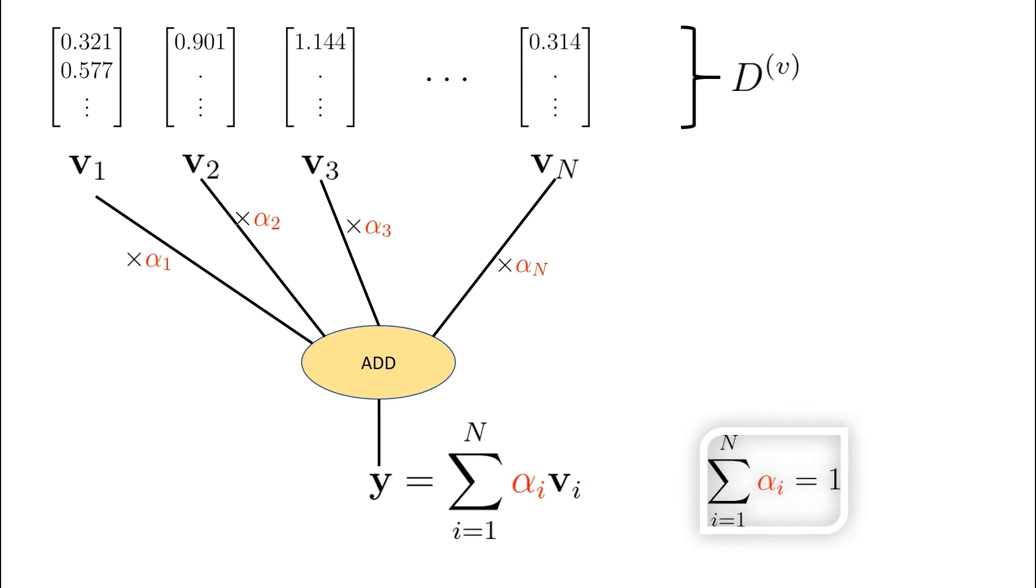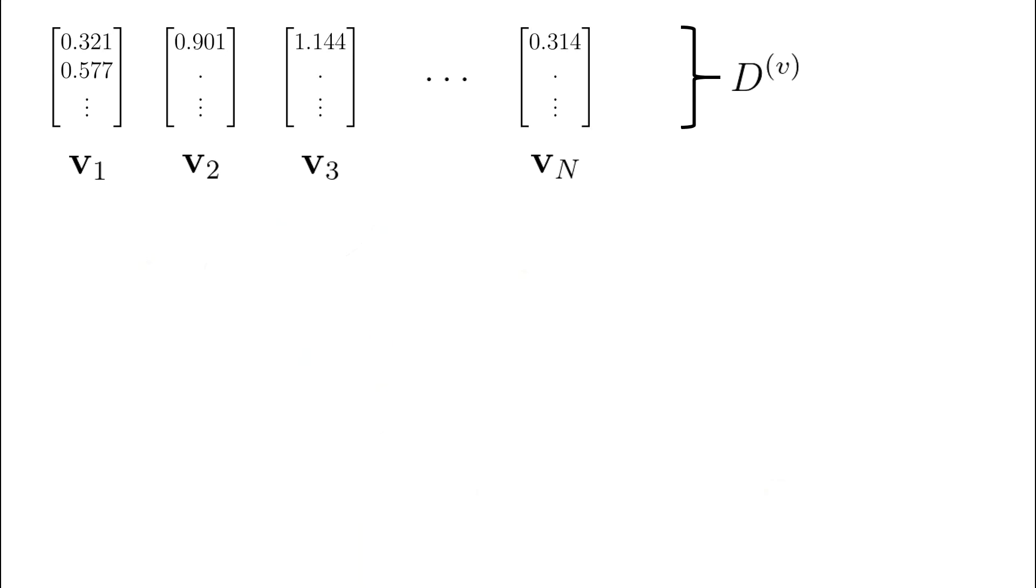Thus, to obtain these alpha weights, we cleverly make use of something called a key and a query. Like in a dictionary in Python, every value has an associated key. Often the key is the value itself, and this is called self-attention. However, we will talk about attention generically, so let's have our sequence of key vectors from k1 to kn.